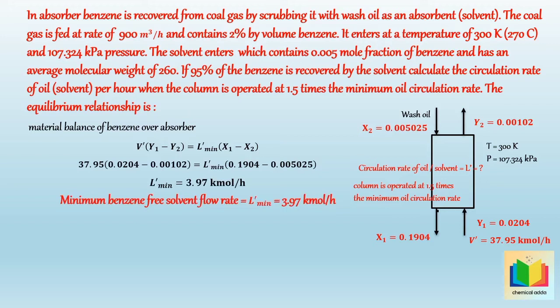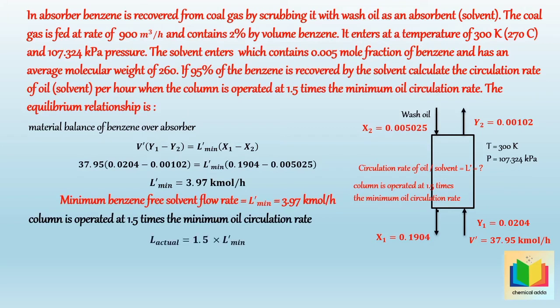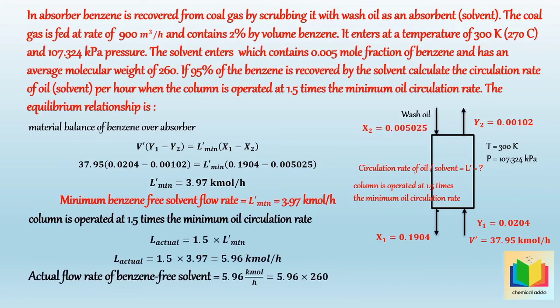Now from this let's calculate the actual flow rate of benzene-free solvent, that is L dash actual. As given, the column is operated at 1.5 times the minimum oil circulation rate. Hence L dash actual is equal to 1.5 times L dash minimum. After putting values and solving it, we get L dash actual is equal to 5.96 kilomole per hour. Hence the actual flow rate of benzene-free solvent equals 5.97 kilomole per hour. If we multiply it by the average molecular weight, that is 260, we get the actual flow rate of benzene-free solvent equal to 1,549.6 kilogram per hour.